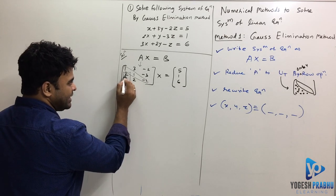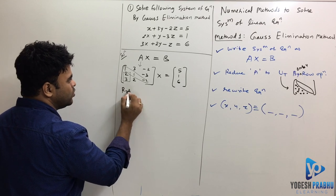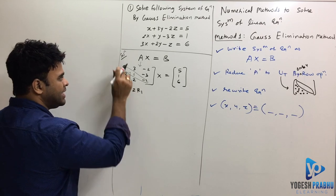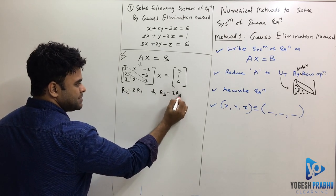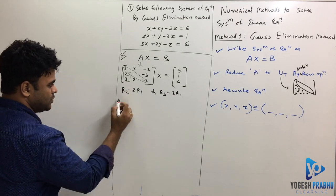How do I do that? To make these two 0s, I will write this as R2 minus 2 times R1. I will double it and subtract. And R3 minus 3 times R1. So it will give me these two 0s.